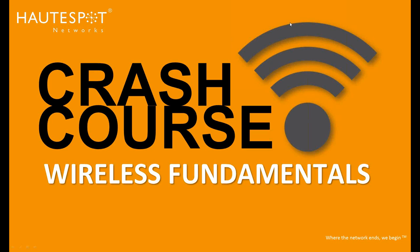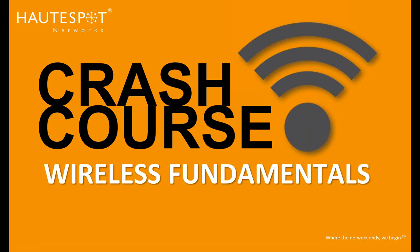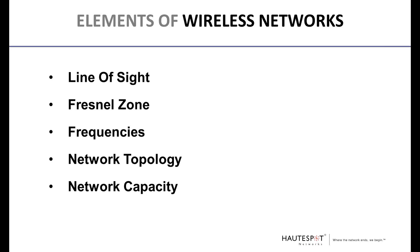We're going to start off with a crash course in wireless fundamentals, which will give you a good base knowledge to work from. There are five main elements of wireless networks that we work with to create robust wireless networks, whether mobile or static for IP video. These include line of sight, the Fresnel zone, wireless frequencies, network topologies, and network capacity.